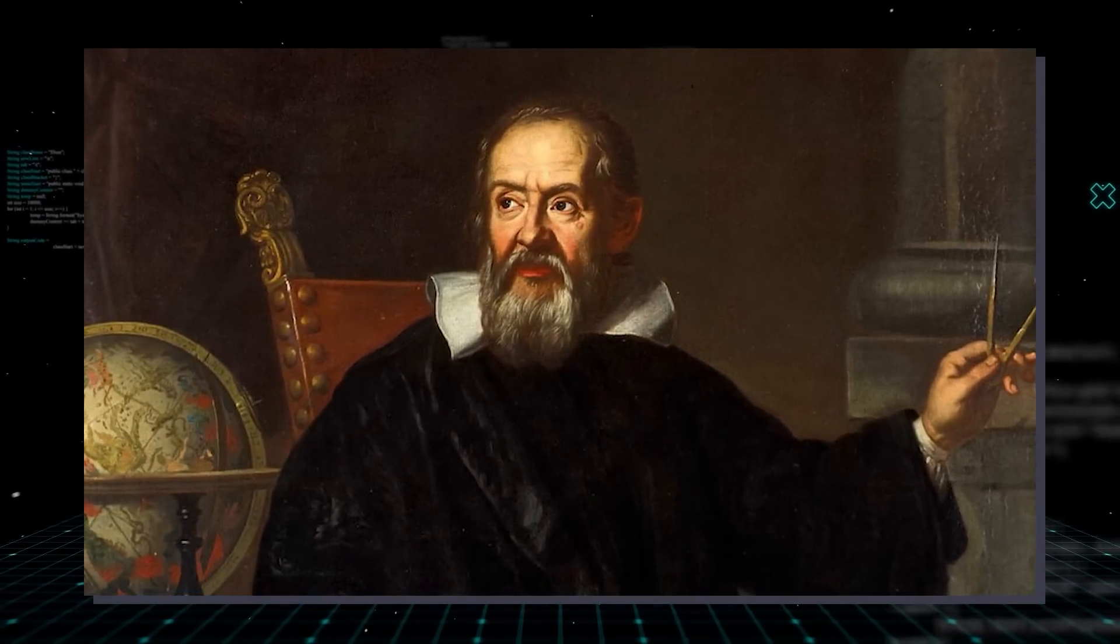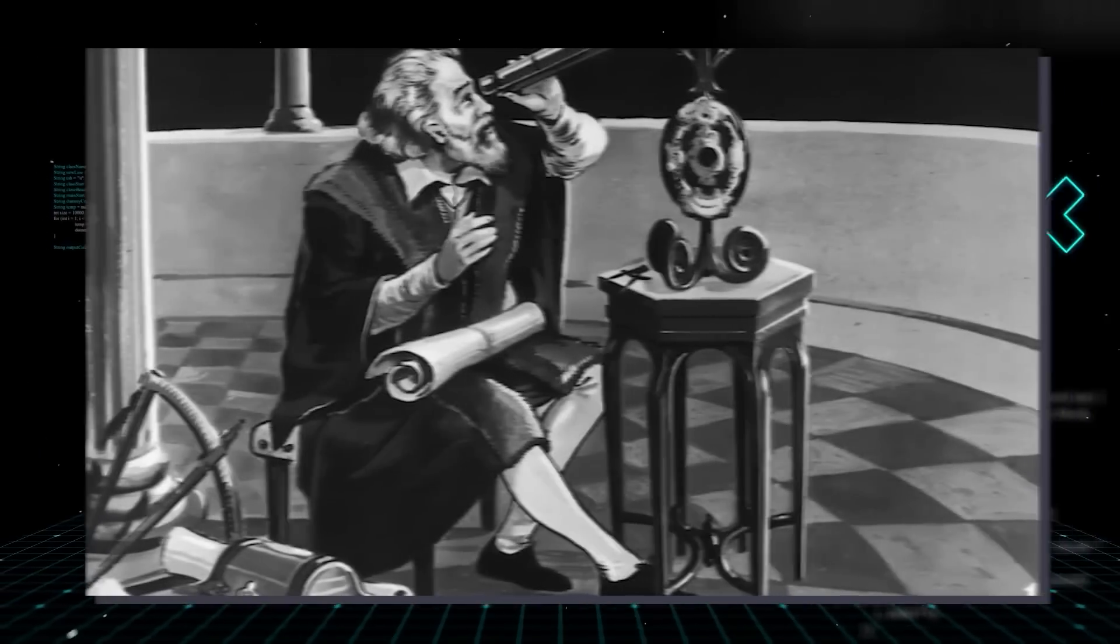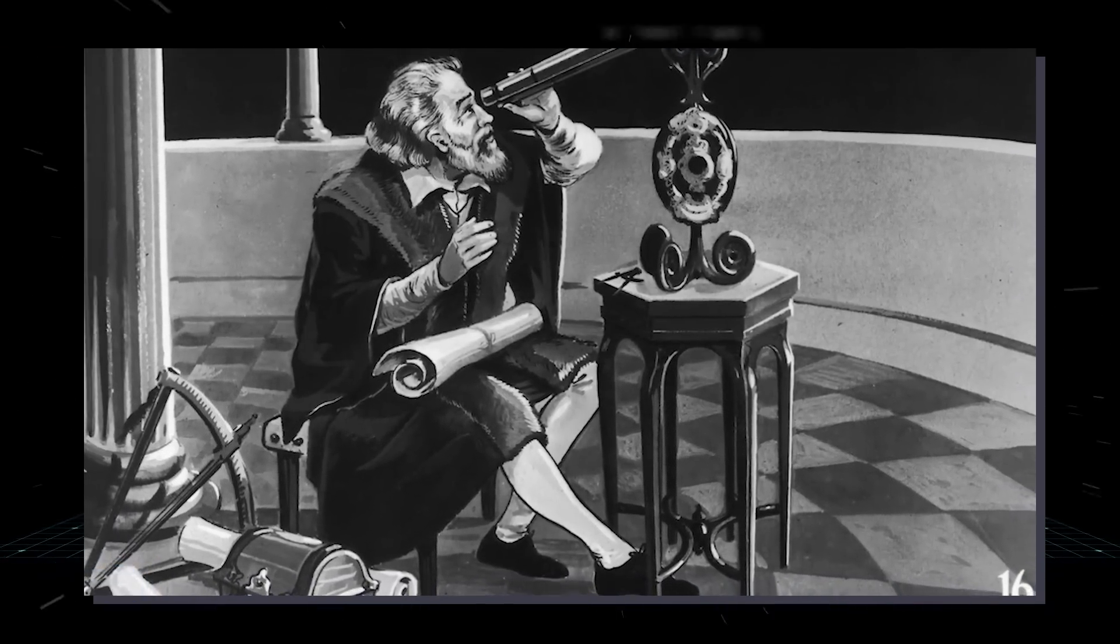Galileo Galilei was the first person to resolve this band of light into distinct stars in 1610 with the help of his telescope.